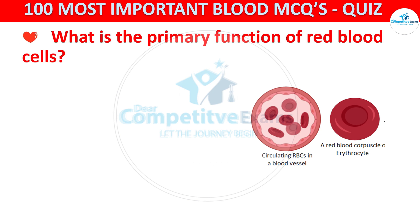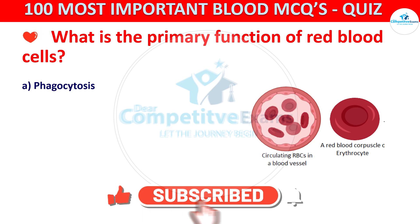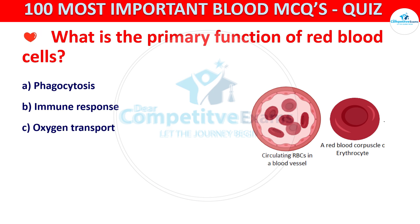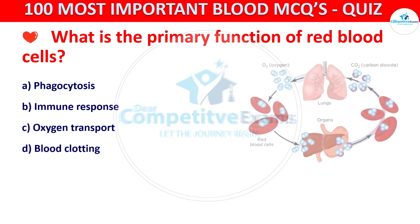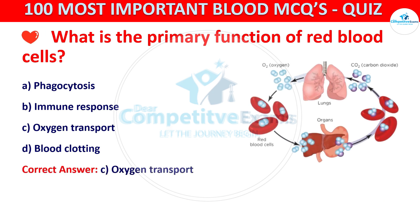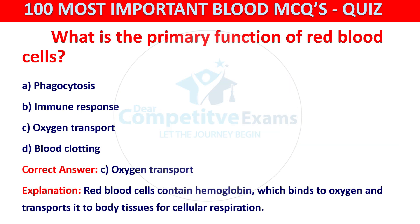What is the primary function of red blood cells? Your options are phagocytosis, immune response, oxygen transport, or blood clotting. The correct answer is C, that is oxygen transport. Red blood cells contain hemoglobin, which binds to oxygen and transports it to body tissues for cellular respiration.